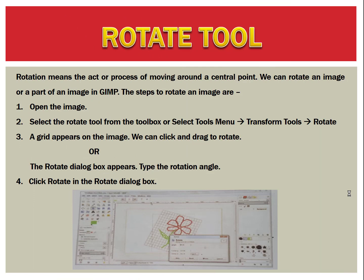Next is the rotate tool. Rotation means the act or process of moving around a central point. We can rotate an image or a part of an image in GIMP. The steps are: open the image, select the rotate tool from the toolbox, or go to Tools menu, Transform Tools, and select Rotate. A grid appears on the image. Click and drag to rotate, or use the Rotate dialog box to type the rotation angle, then click Rotate.